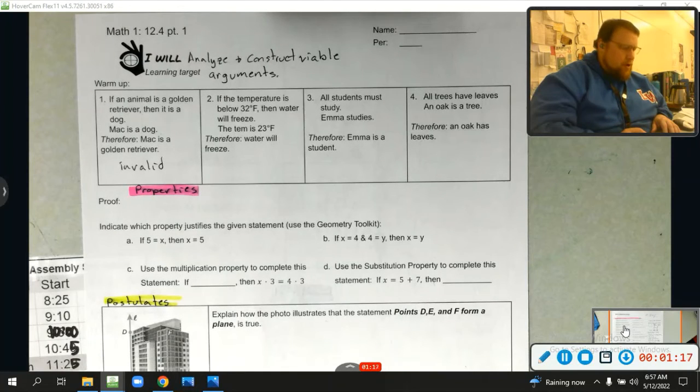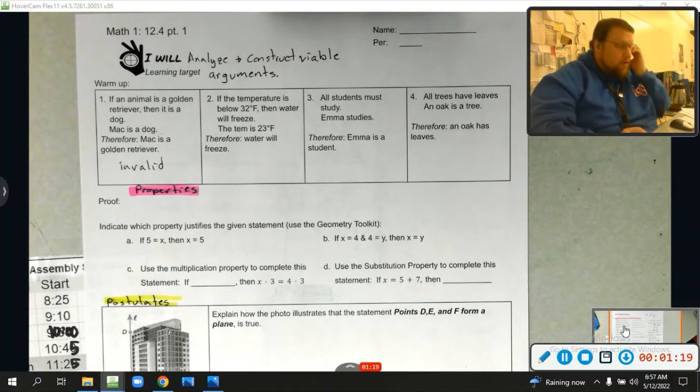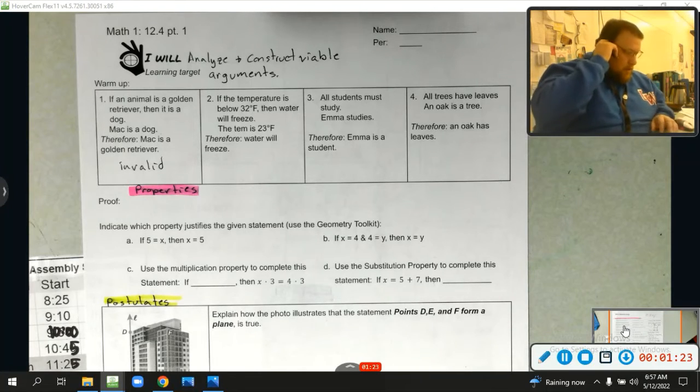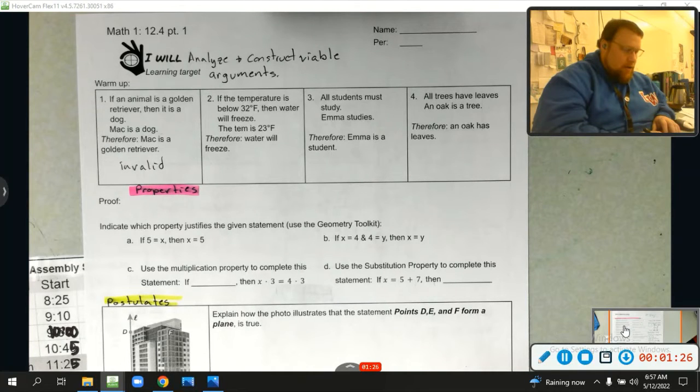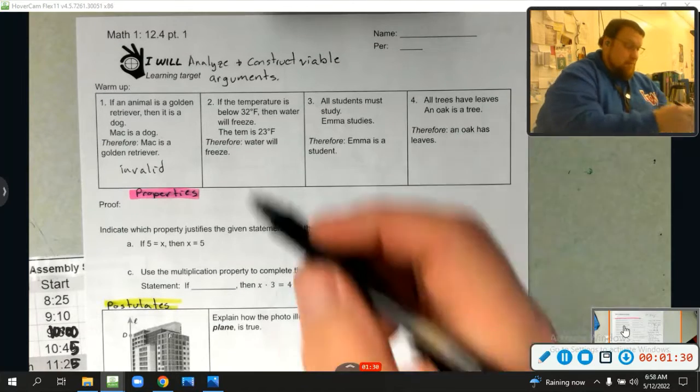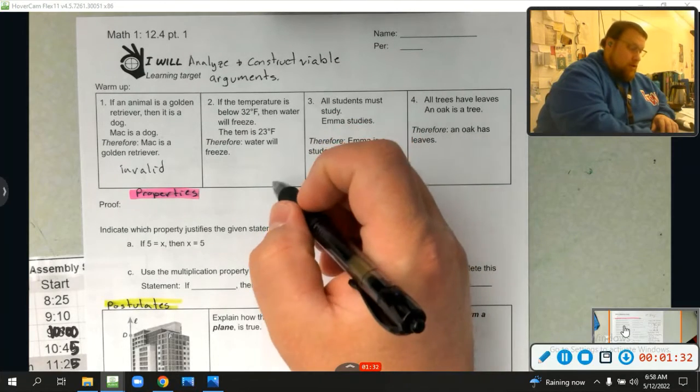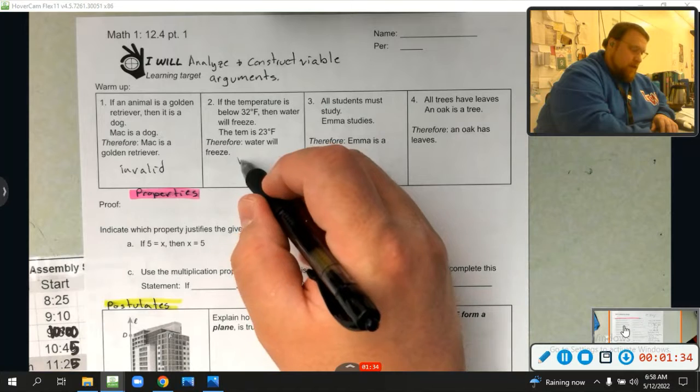If the temperature is below 32 degrees Fahrenheit, then the water will freeze. The temperature is 23 degrees Fahrenheit. Therefore, the water will freeze. Yep, it's below 32, which means the water will freeze. That is a valid argument.